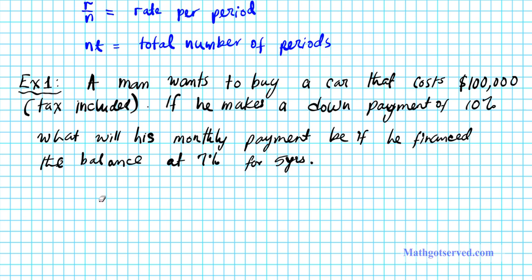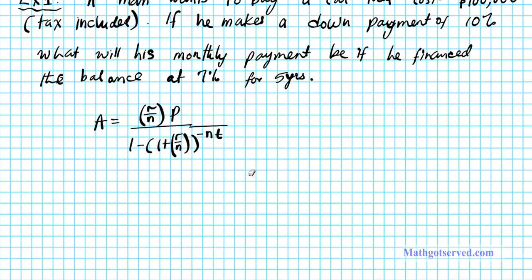So the formula that I prefer to use, and bring it up again, is A equals R over N, R over N is the rate per period, times the principal divided by 1 minus 1 plus R over N, the rate per period again, all this raised to be negative of the total number of periods NT. All right, so what we're going to do is just set up an expression on the right, a solvable, simplifiable expression, and then figure out what the monthly payments will be.